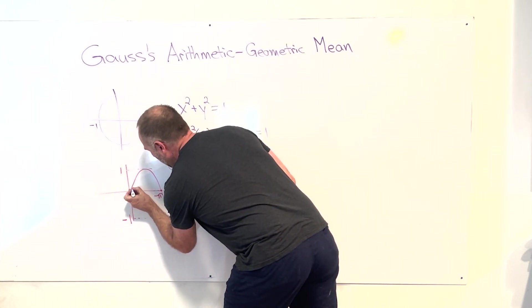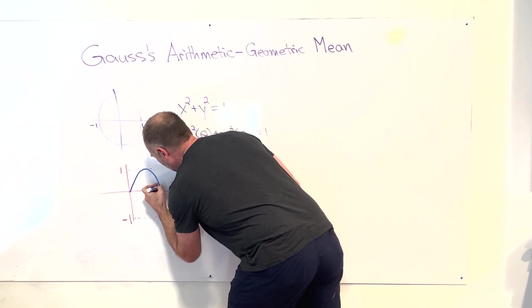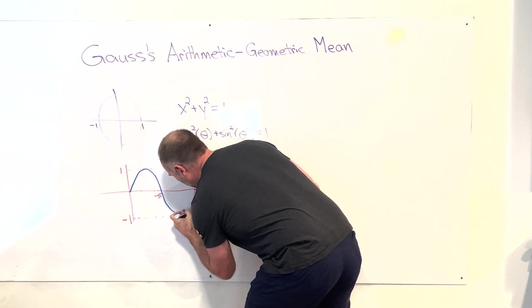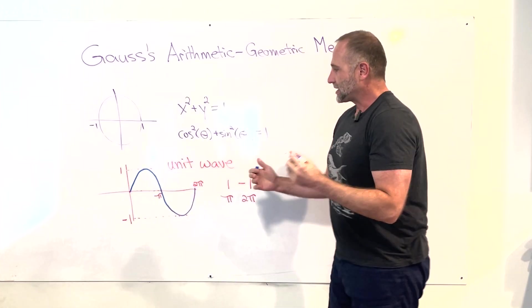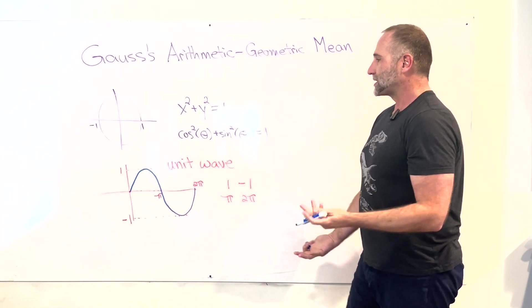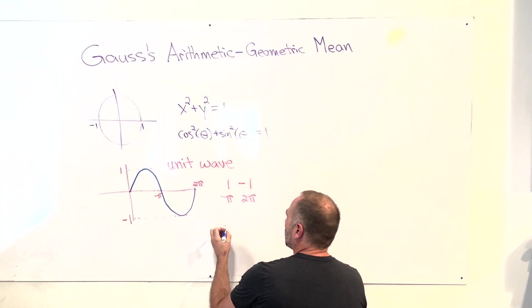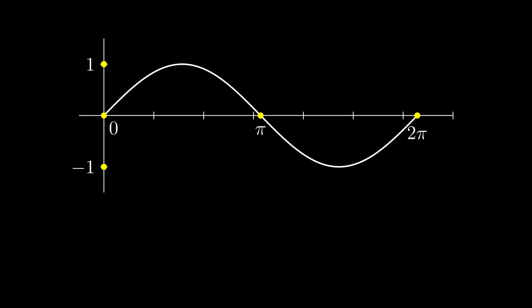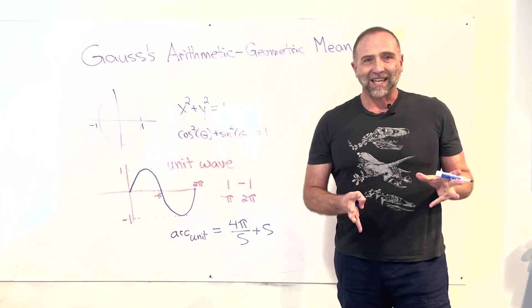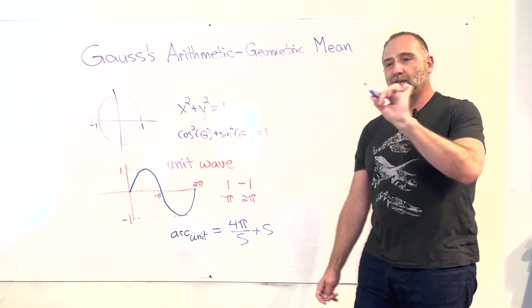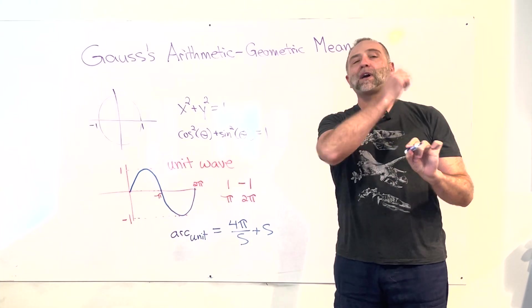This one, the actual length of the whole curve. That's obviously a property too. What's the value of that? It turns out that the arc length of the unit wave is equal to 4π over s plus s. And s is the value of the arc length of the unit lemniscate. So the full length of the unit lemniscate. Start any position and go all the way around until you get back to that same position. That's the value. The arc length here is s.